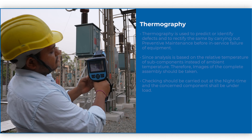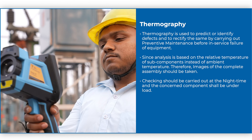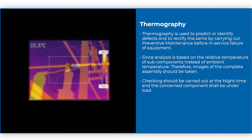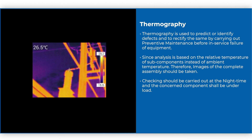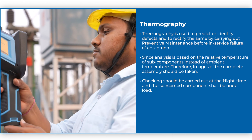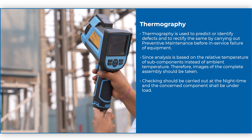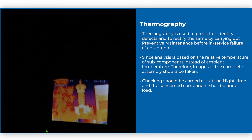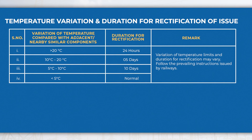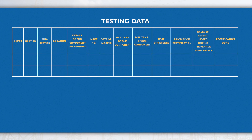Thermography: Thermography is used to predict or identify defects and to rectify them by carrying out preventive maintenance before in-service failure of equipment. Since analysis is based on the relative temperature of subcomponents instead of ambient temperature, images of the complete assembly should be taken. Checking should be carried out at night time and the concerned component shall be under load. The limit for temperature variation and duration for rectification of issues is given in the table. Testing data may be recorded in this format for further investigation and future reference.